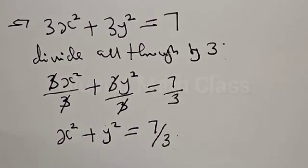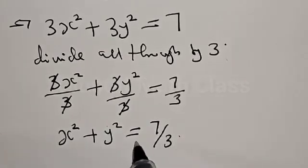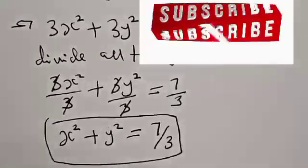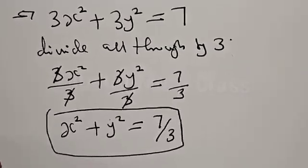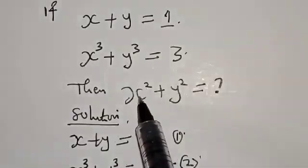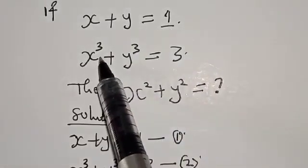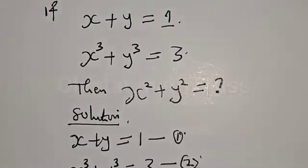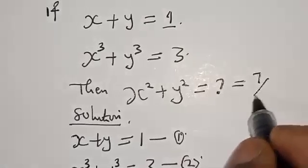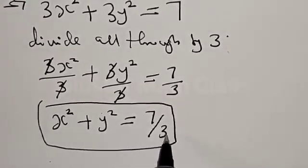So from the question, we were asked to find the value of s squared plus y squared. Given s plus y equal to 1 and s cubed plus y cubed equal to 3, we've found that s squared plus y squared is equal to 7 over 3. That is our final answer. Please don't forget to like, share, comment, and subscribe. If you have a better solution, kindly let me know in the comment section. Thank you.